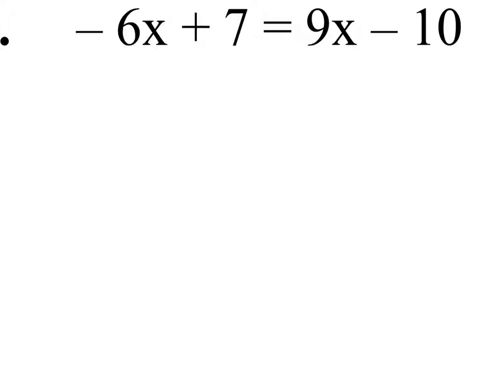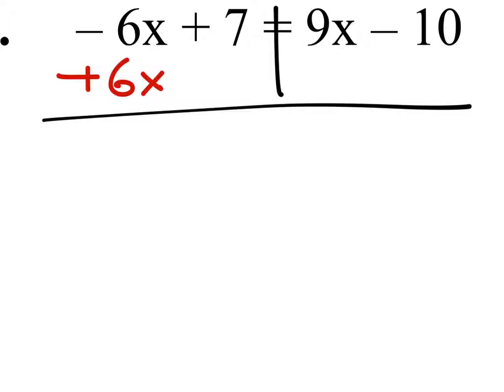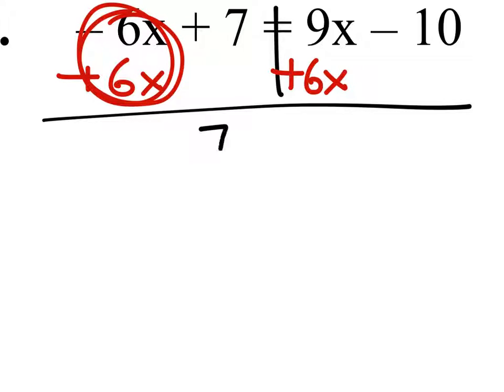So notice we've got that negative 6x on the left side of the equals. We can't have it on the left. We wanted it on the right. So we need to make that a zero by adding 6x to both sides. And this becomes a zero. We still have that 7 equals 9x plus 6x is a 15x. And that's minus 10.